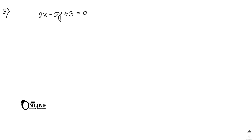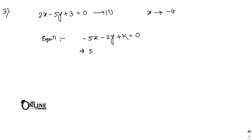Sum number three: find the equation of the straight line perpendicular to 2x - 5y + 3 = 0 and having x-intercept -4. First find the family of lines perpendicular to the given line. The given line is 2x - 5y + 3 = 0, so the equation of the family of perpendicular lines is 5x + 2y - k = 0, where k is the parameter.